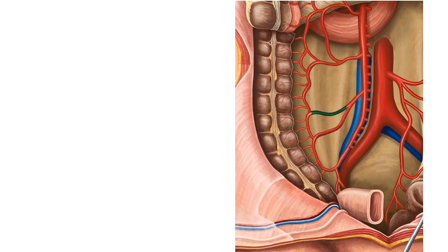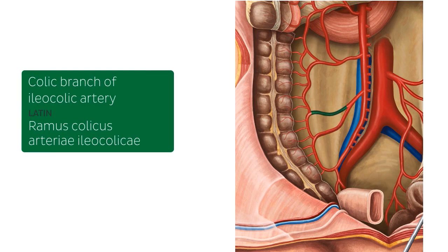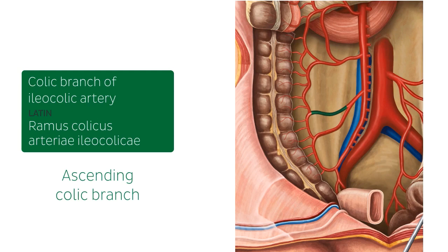Superior to the ileal branch is the colic branch of the ileocolic artery. The colic branch supplies the ascending colon and so it's often called the ascending colic branch. The ileal and colic branches anastomose together via an arcade. These arcades occur throughout most of the length of the large intestine and are essential to the efficient blood supply, as they ensure that if one artery is blocked or damaged, another artery can compensate.